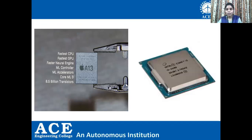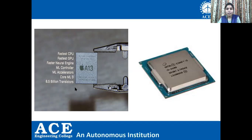Here on the left-hand side you can see the A13 processor, which is present in our iPhone 11 Pro. If you look at the last line, what do you observe? 8.5 billion transistors are present. Now we know why we are talking about a processor and why we are talking about the performance of a mobile phone.